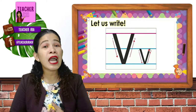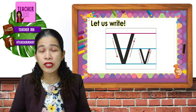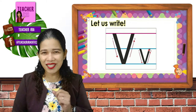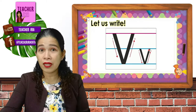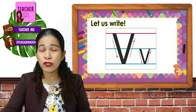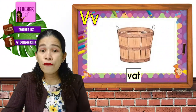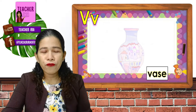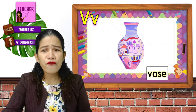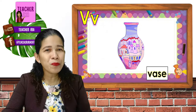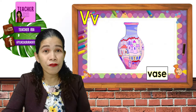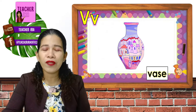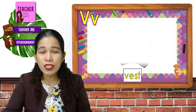Now, we will have different words with V beginning sound. Let us take a look at these words. We follow Teacher Aira so that you would learn them. V, vent. V, vent. V, vase. What do you put in a vase? Yes, usually flowers.